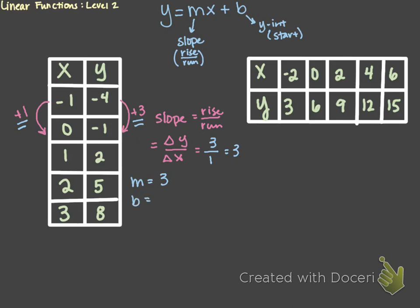Now we need to find our b value, or our starting point. We always start at 0, so when x is 0, that is going to be our starting point. We look on our table and find where x is 0 — right here, the second entry in our table. So our b value is going to equal negative 1; when x is 0, y is negative 1. Now all we have to do is plug our m and b into our slope-intercept equation. We get y equals 3x, and our b value is negative 1, so our equation is y equals 3x minus 1.